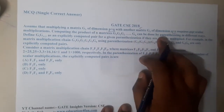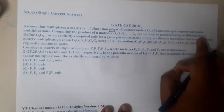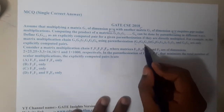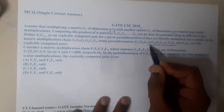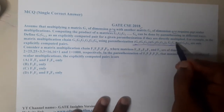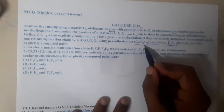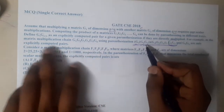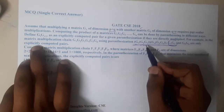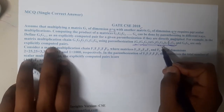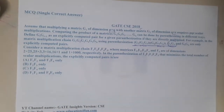Computing the product of n matrices from g1 to gn can be done by parenthesizing in different ways. For example, g2 and g3 can be initially multiplied first — those are called explicitly computed pairs. Similarly, g5 and g6 are also explicitly computed because they are computed separately.